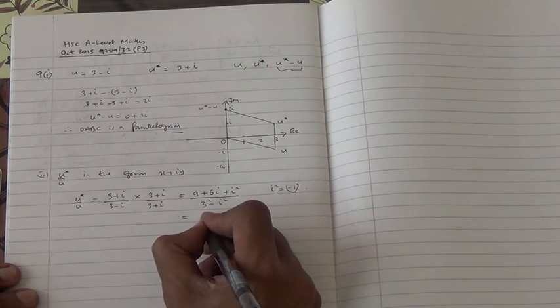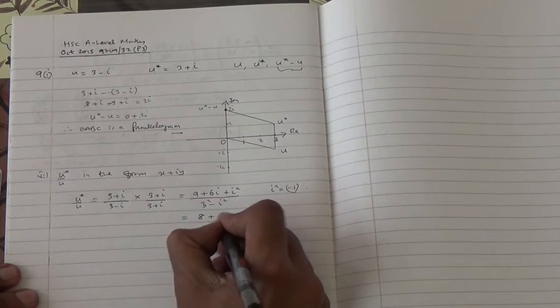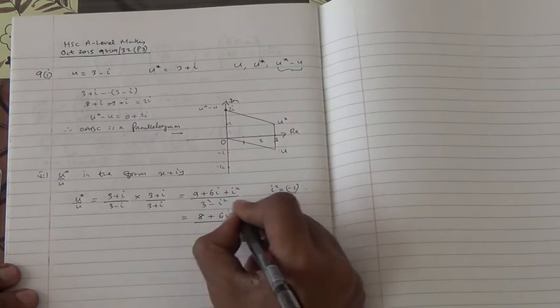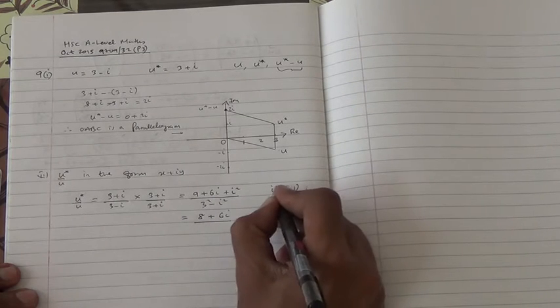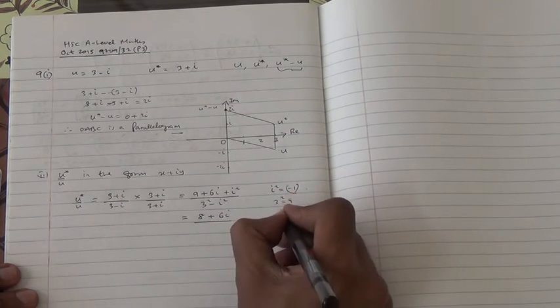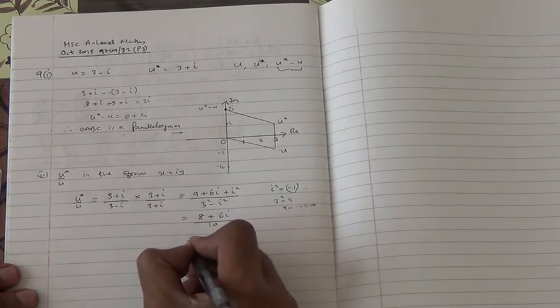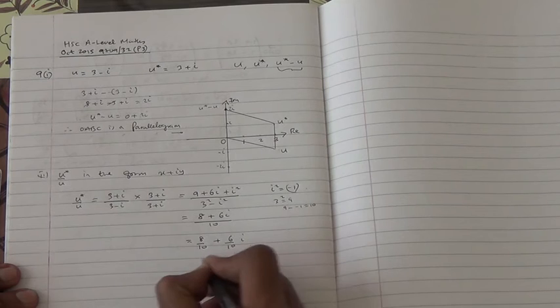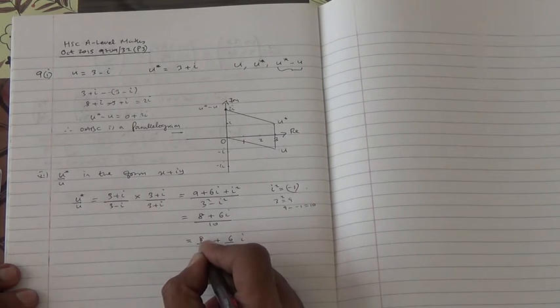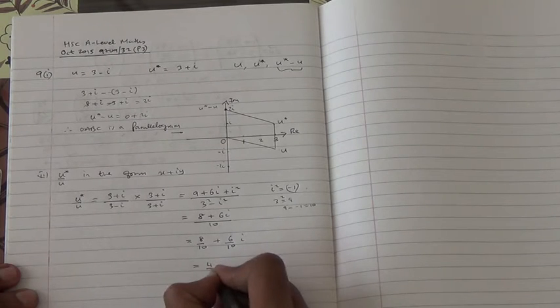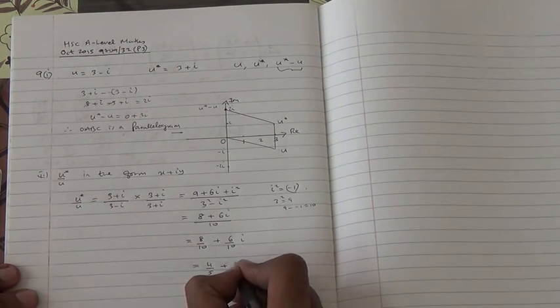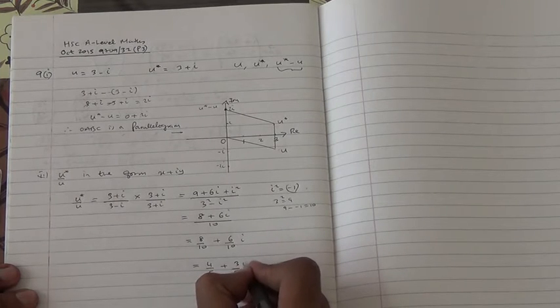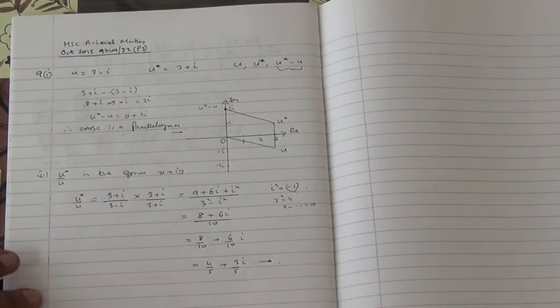Therefore, 9 minus 1 is going to be 8. So we have 8 plus 6i divided by 9. What is 3 squared? 3 squared is 9. Minus i squared. i squared is minus 1. So we have 9 minus minus 1, which is going to be 10. So 10. So basically, we have 8 over 10 plus 6 over 10i. We can simplify this further by dividing by 2. It's going to be 4 over 5 plus 3 over 5i. Here we are. That's the second part.